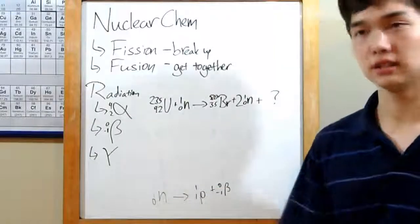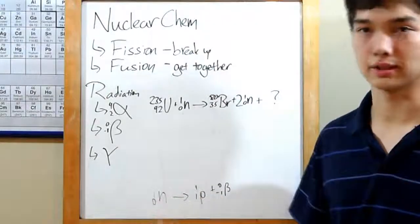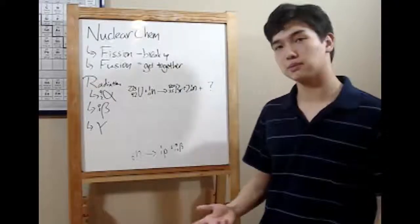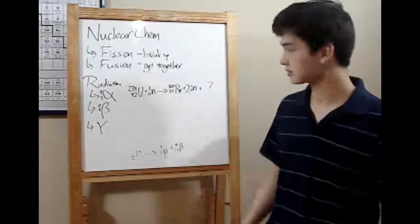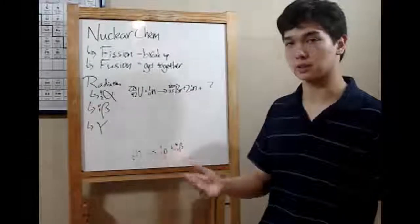The last thing is gamma radiation. That's this funny-looking symbol that looks like a Y. You tend not to write these into the chemical equation, because it's just energy. So let's head over to one of those equations right now.